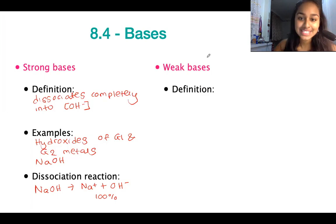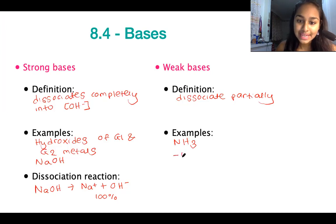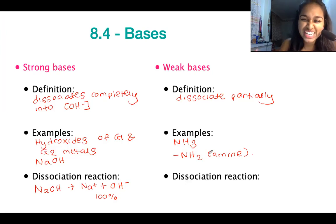In terms of weak bases, they're going to dissociate partially, as we saw with weak acids earlier. Examples of weak bases include ammonia, which is NH3, and also anything that's got an amine functional group. You learn more about the amines when it comes to organic chemistry. Unfortunately, you don't really need to know the dissociation reaction for weak bases. But the main principle is that they dissociate partially, so in theory we would also be using the equilibrium arrows.